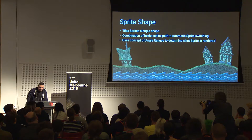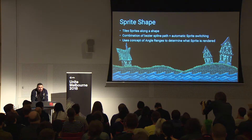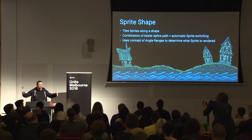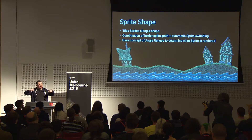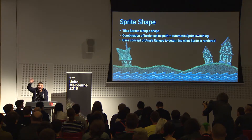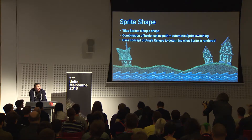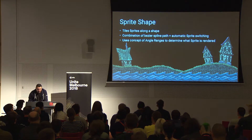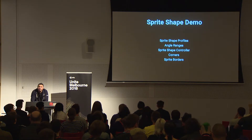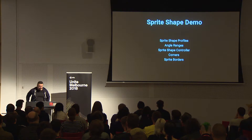Next up, sprite shape. The idea behind sprite shape is defining a shape, then tiling sprites along the edge and tiling sprites in the fill. It's a Bezier spline path with sprite switching set up using angle ranges. Let's jump into Unity and look at the sprite shape profile, angle ranges, sprite shape controller, how to deal with corners in organic shapes, and other techniques when working with multiple sprite shapes.